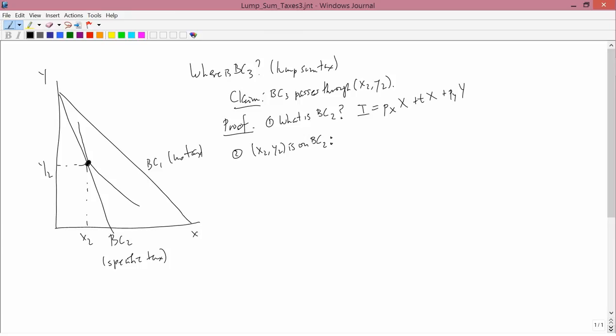In number 1, X and Y are variables. What I'm going to do is, instead of X and Y being variables, I'm going to make X be the specific number X2, and Y be the specific number Y2. So they're not going to be variables. They're going to be specific numbers, constants. But I know, since X2, Y2 is on BC2 from the graph, that algebraically, if I plug X2, Y2 into BC2's equation, that equation is going to be satisfied with equality.